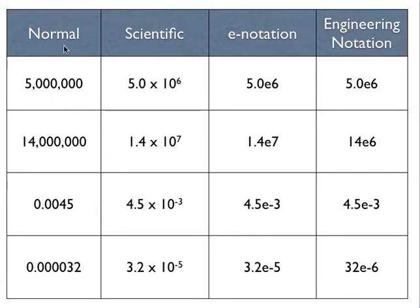The normal notation uses commas and decimal points. The scientific method uses ten to some power. The e notation takes that ten to some power and replaces it with just an e. And the engineering notation uses e notation but the power has to be divisible by three.